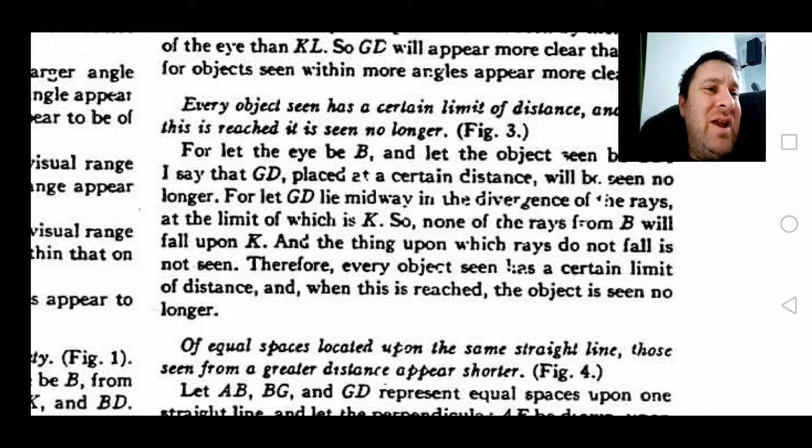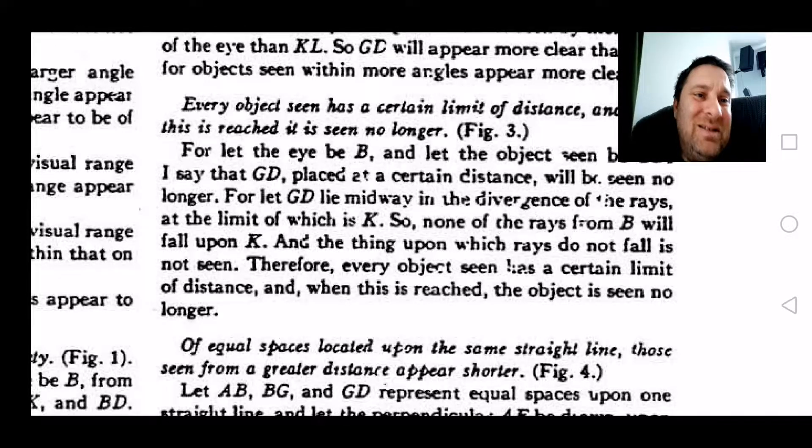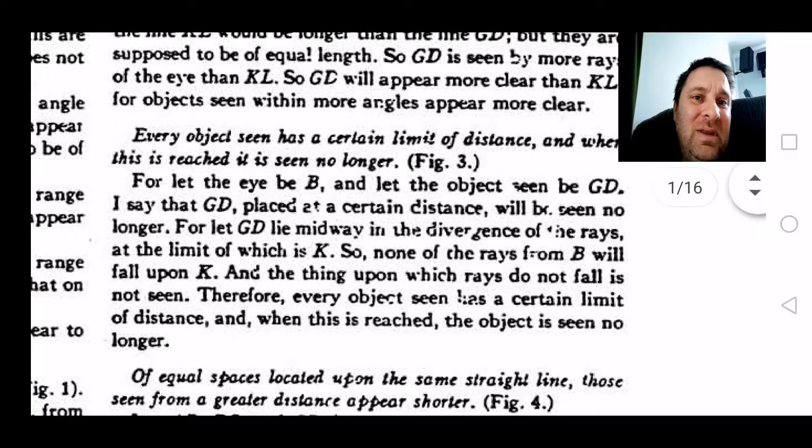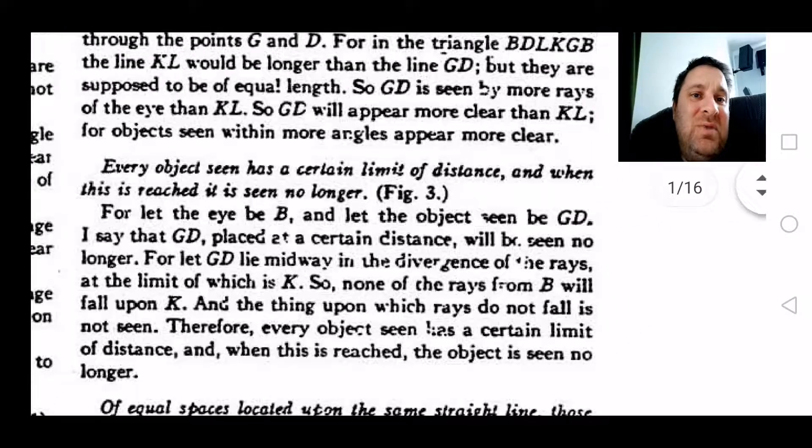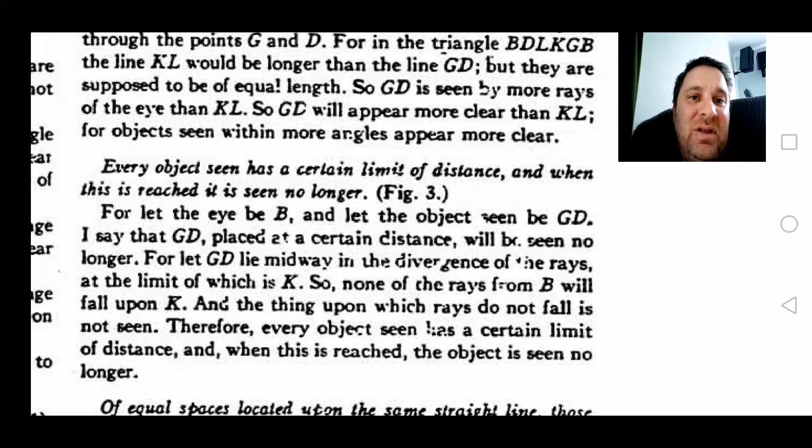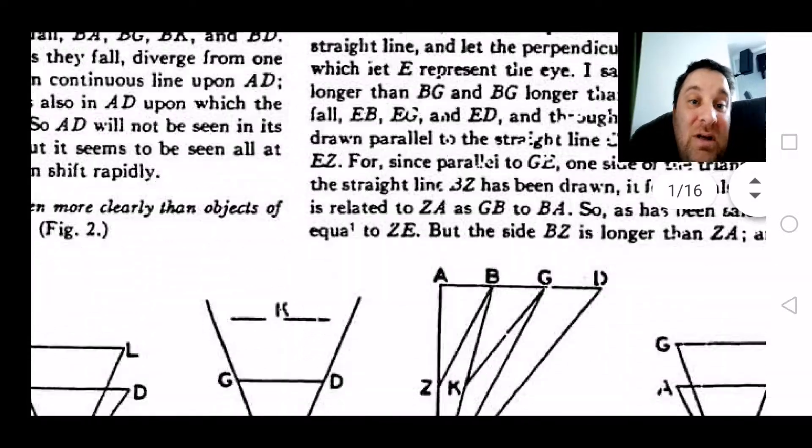Like I said before in the video, it doesn't matter which way the light rays come into your eye or out of your eye. It doesn't change the geometry. So every object seen has a certain limit of distance, and when that is reached, it is no longer seen.